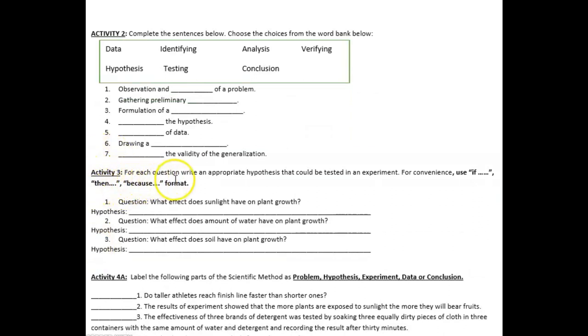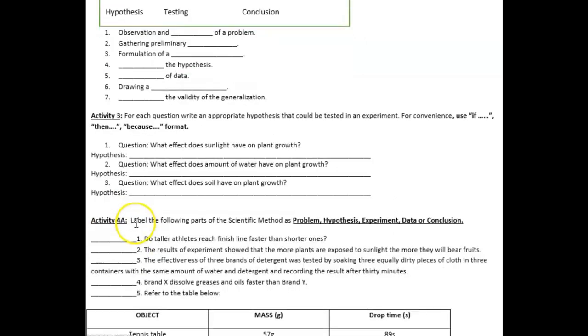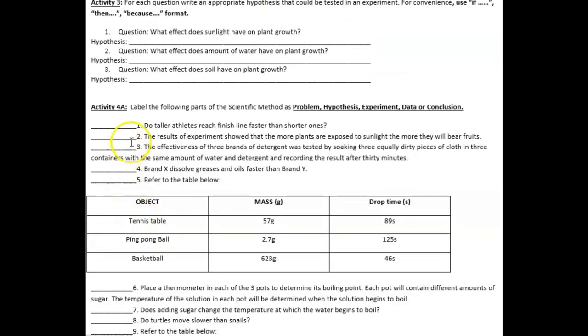For Activity Number 3, for each question write an appropriate hypothesis that could be tested in an experiment. For convenience, use if-then-because format. Remember that when you say hypothesis, this is an educated guess. Let's move on to Activity 4.